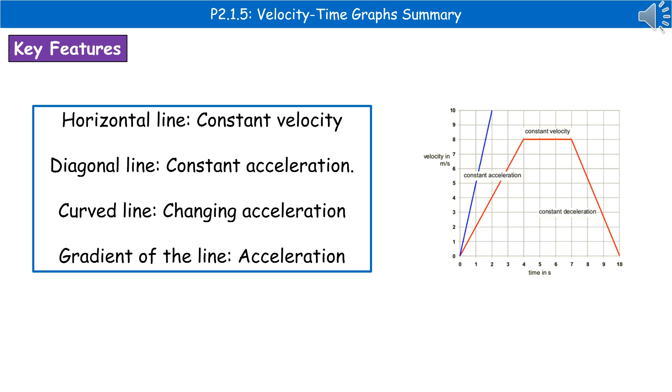When looking at our velocity-time graph, we need to know the key features of what the lines represent. When we have a horizontal line, that is a constant velocity. It could be traveling at 30 miles an hour, for example. The horizontal line means it's traveling at 30 miles an hour for that entire period.